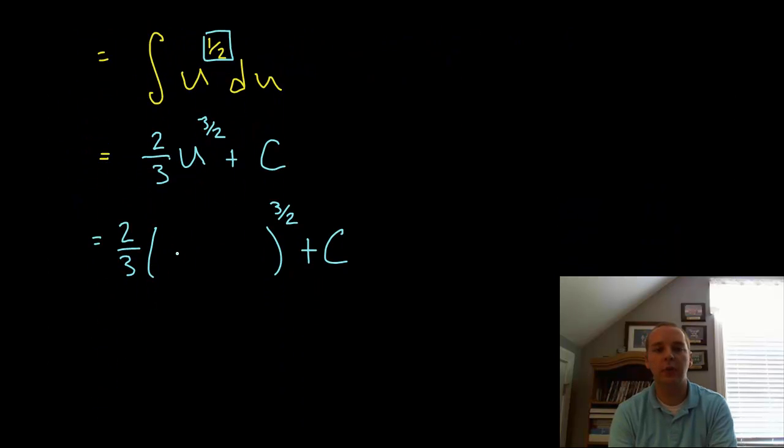So the final answer would be 2 thirds times x squared plus 5 raised to the 3 halves plus c. So we see the general concept of what we're doing here. We have these more complicated integrals when we use u-substitution, often times with composition and layers and layers of functions. And by using a u-substitution we can transform it into an easier integral in terms of u. We work the integral out in terms of u and then once we get our answer we'll take that answer back in terms of x.